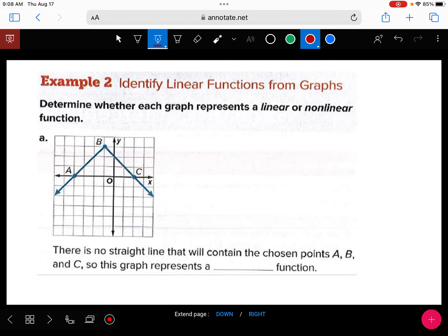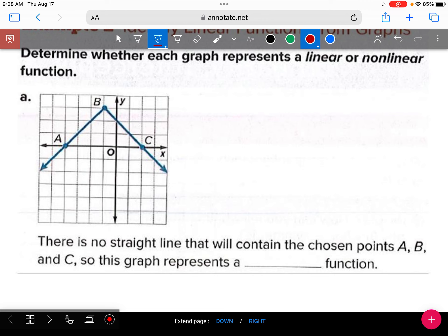So, again, a linear simply means that it's a straight line. Is this graph a straight line? No. So, if all the points don't fall on a straight line, it is nonlinear. So, the equation for this function is going to have something happening to a variable to cause it not to be a straight line. So, if it's not a straight line, it's not a linear function.